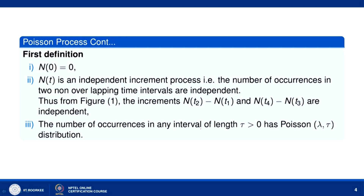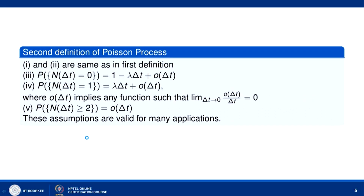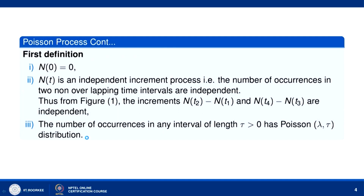The number of occurrences in any interval of length tau follows a Poisson(lambda·tau) distribution. There is also a second definition of the Poisson process. In the second definition, conditions 1 and 2 are the same.